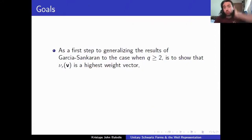Okay, so what are the goals then? What did I do in all of this? Well, as I just mentioned, this representation theoretic proof is an essential step in the q equals 1 case, showing this vector is a highest weight vector. So if we want to prove this in any of the cases when q is greater than or equal to 2, well, then perhaps we should start by showing that this ν_r is, in fact, the highest weight vector.